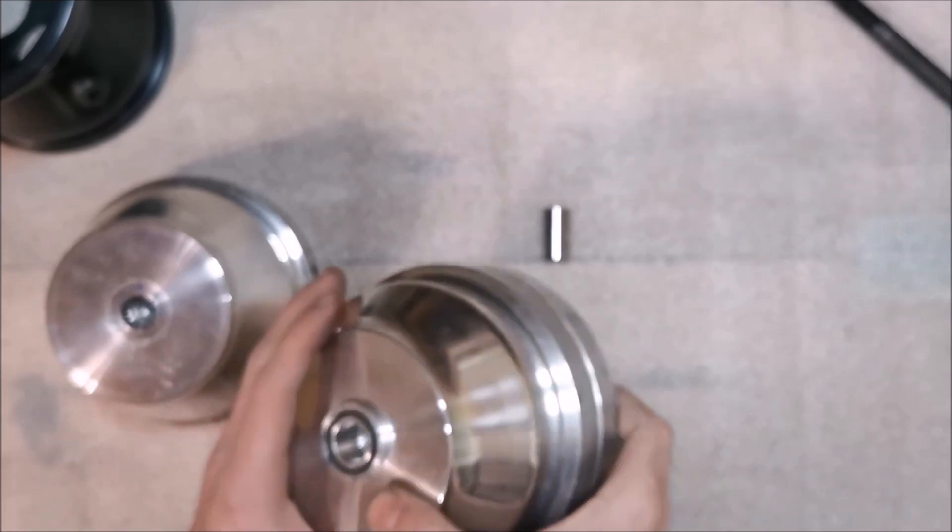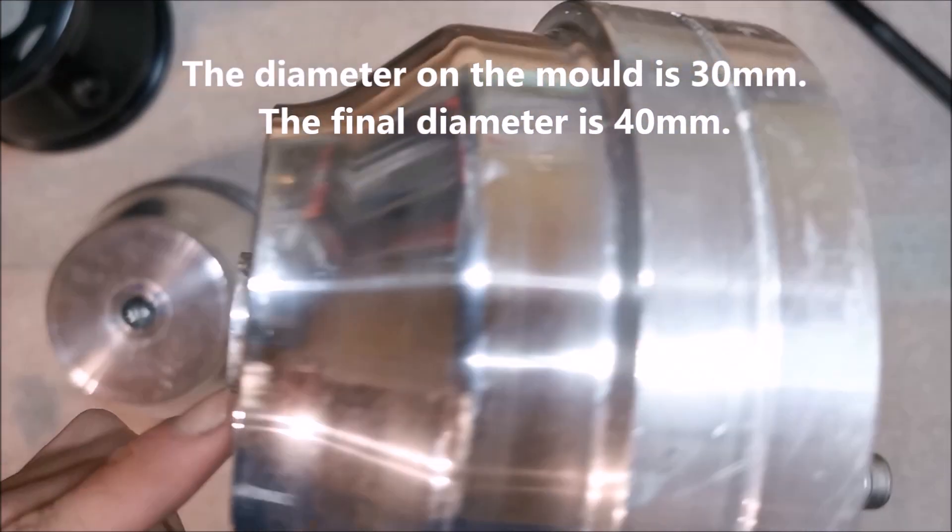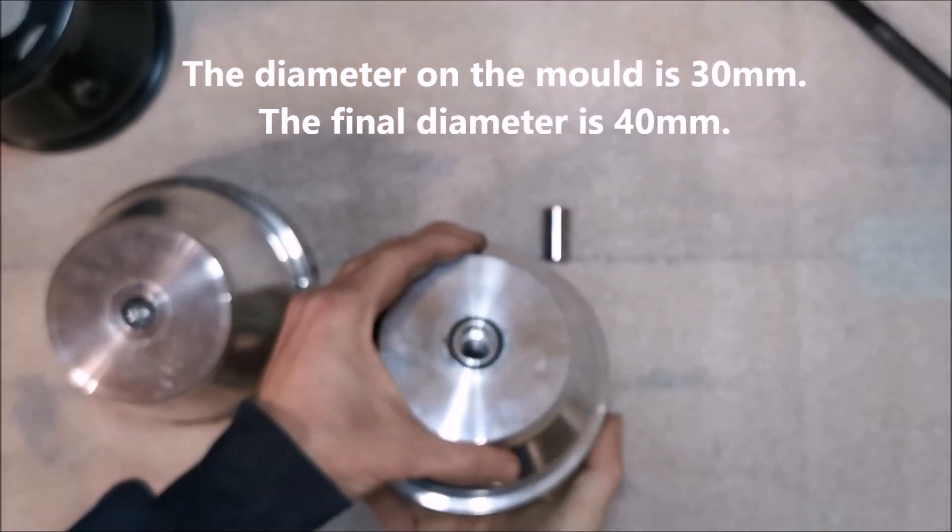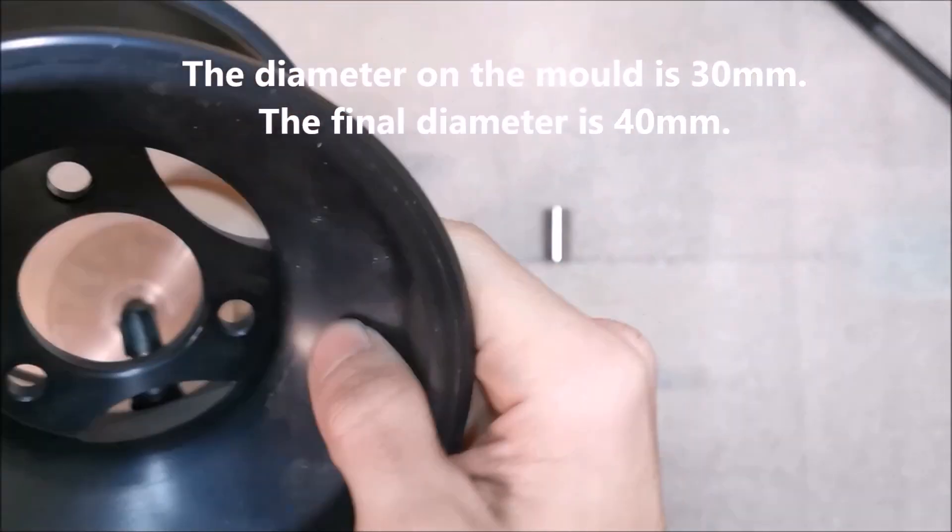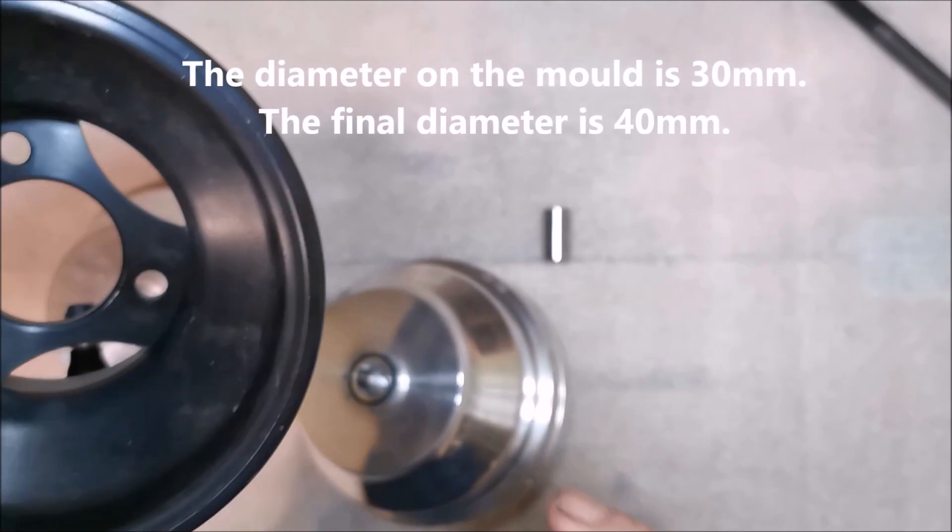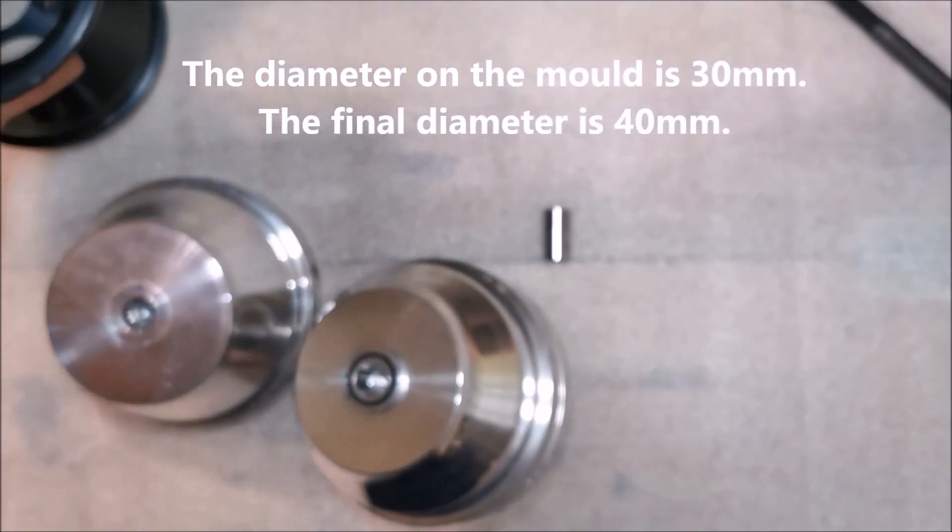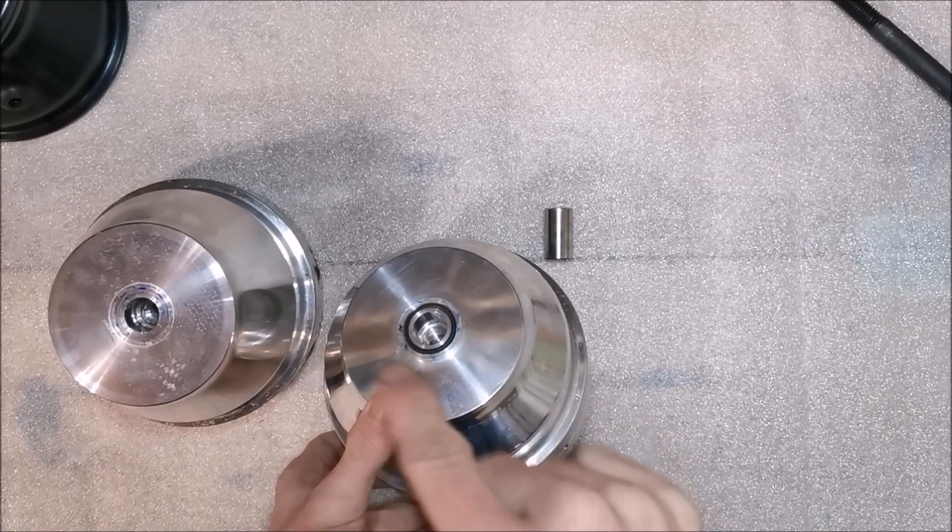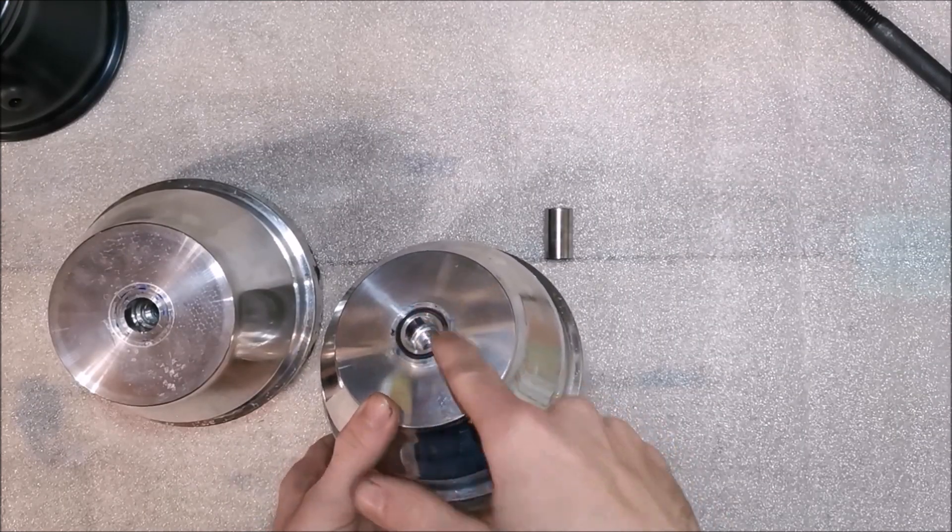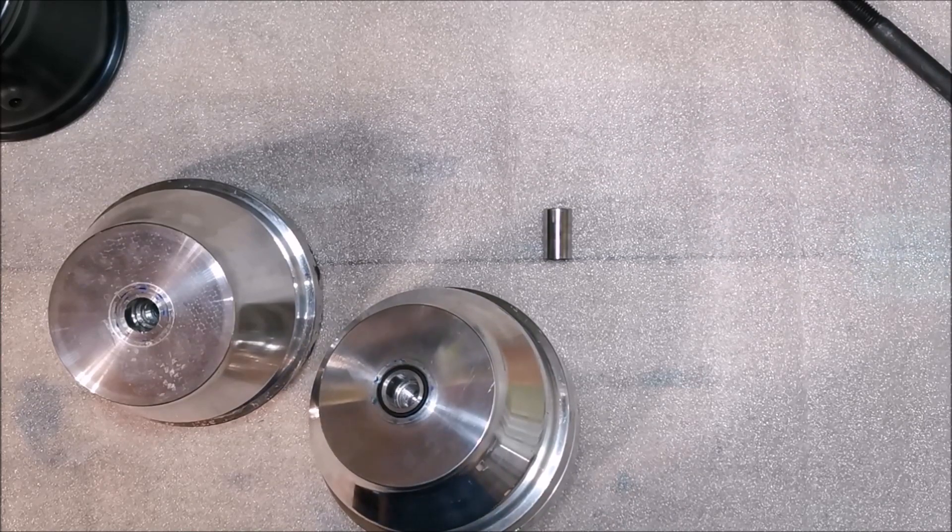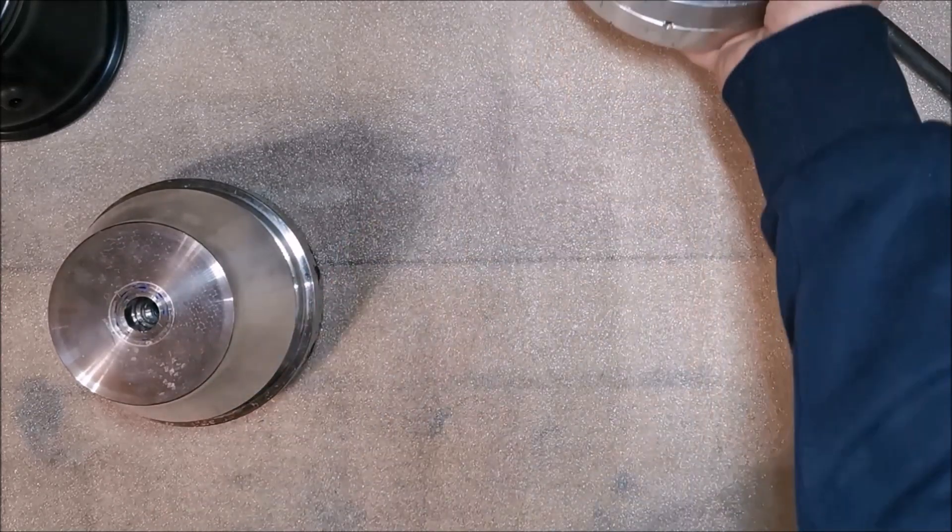And here you can also see this little distance here. And this builds basically here this center hole. Which is of course not the final diameter. I made this a bit smaller. So the final diameter is gonna be made on the CNC mill. So let's put them aside.